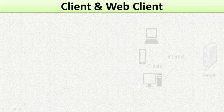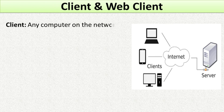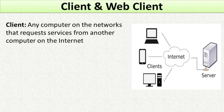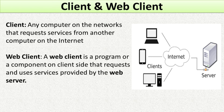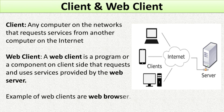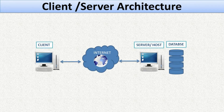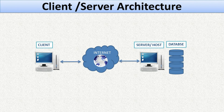A client is any computer on the network that requests services from another computer. A web client is a program on the client side that requests and uses services provided by the web server — for example, web browsers. The web browser and the web server are linked together using client-server architecture. In this architecture, each computer on the network is either a client or a server.